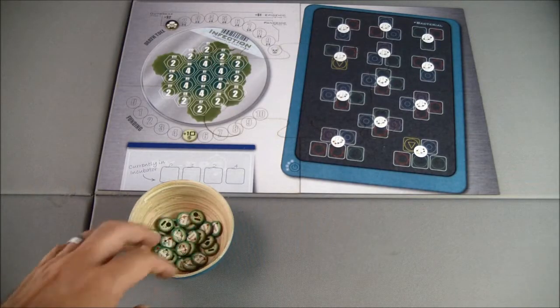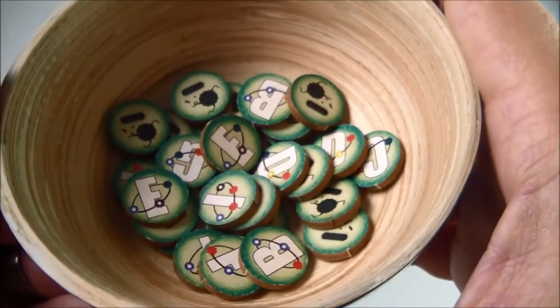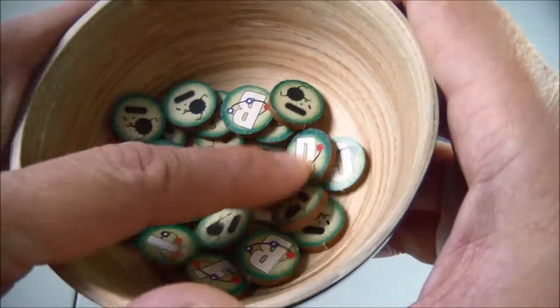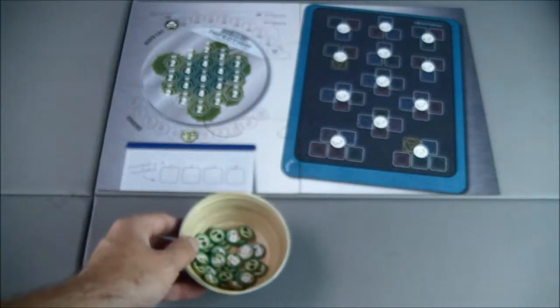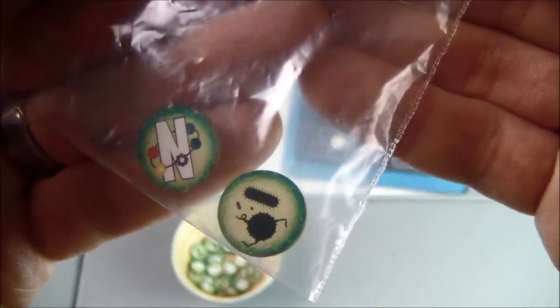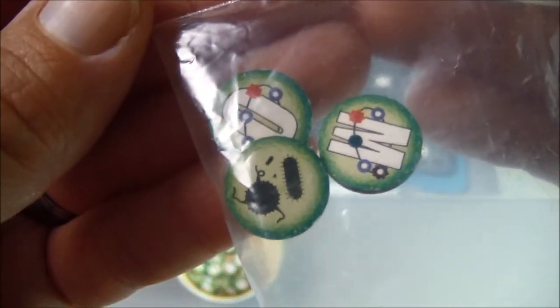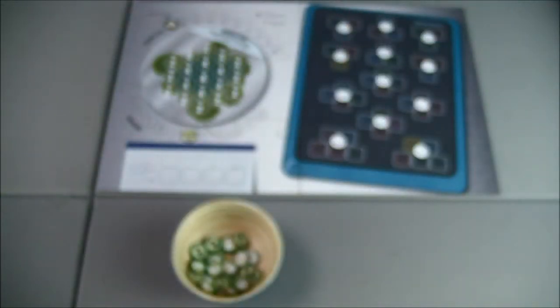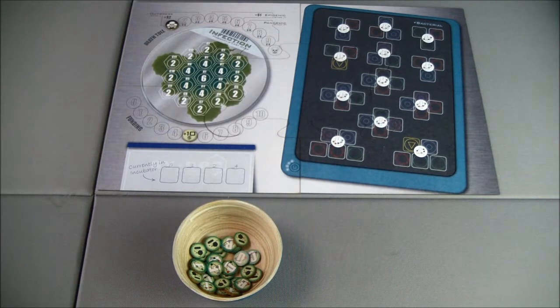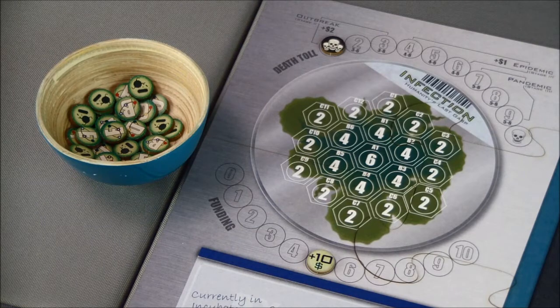Next we're going to create the molecule pool, and that's what all of these tokens are here with the different letters on them. For the bacterial version of the game you remove N, and then M and O from the game, so those three are not part of this game. Now we're going to build our initial bacteria that we're going to deal with.